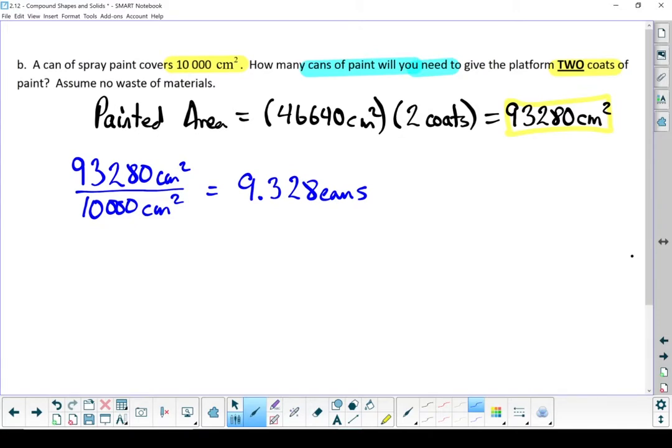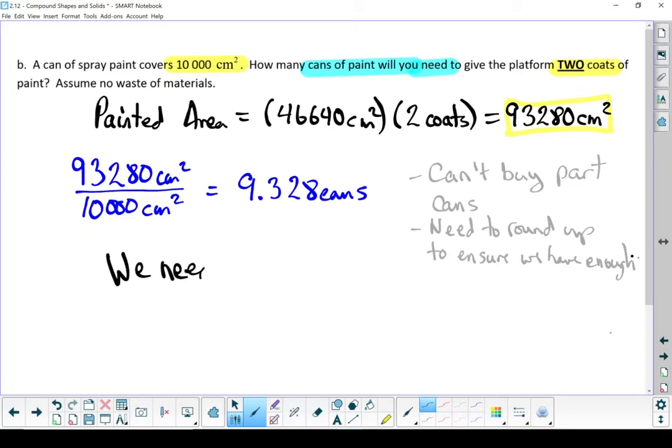Besides, it gives us a little extra just in case we make a mistake. If I round that number up, we need to buy 10 cans of paint. Put a box around it, and there's the answer to part B.